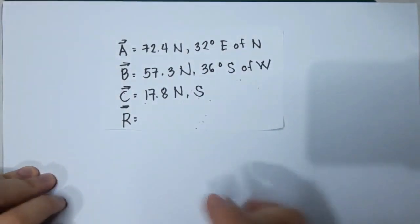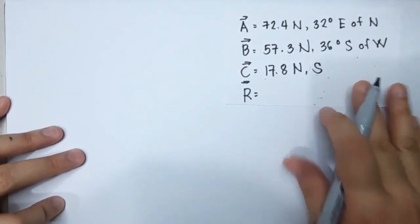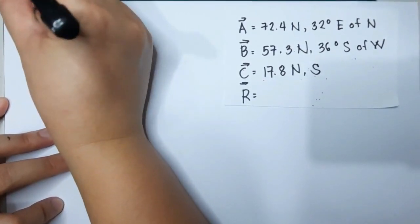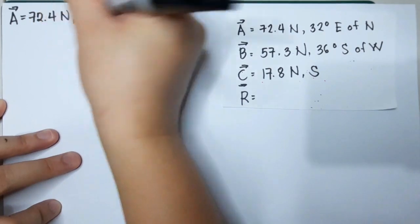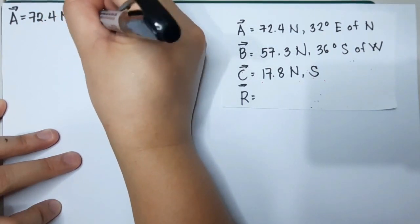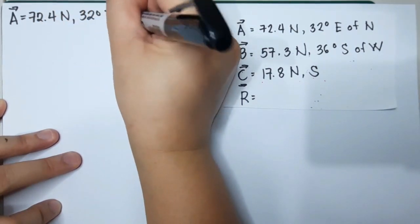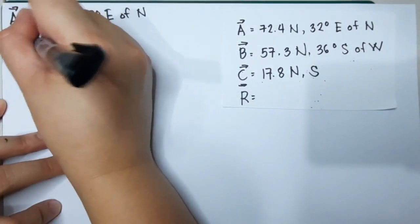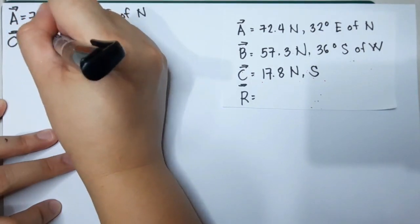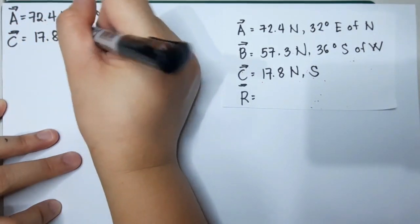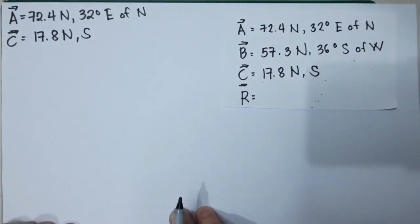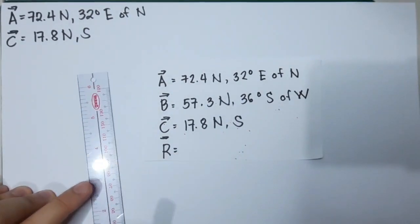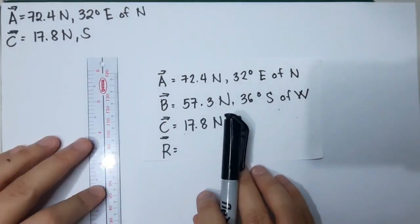Let's write the given first. Vector A is equal to 72.4 newtons, 32 degrees east of north. Vector C is equal to 17.8 newtons, south.